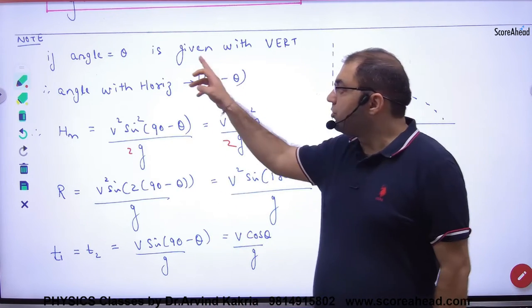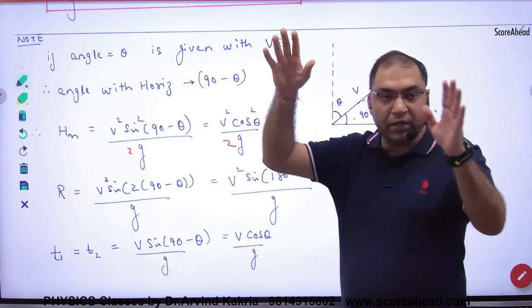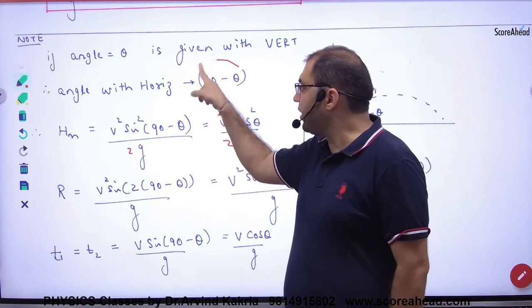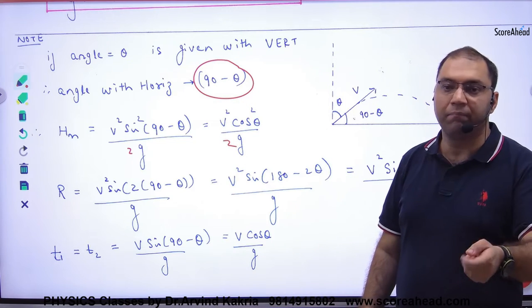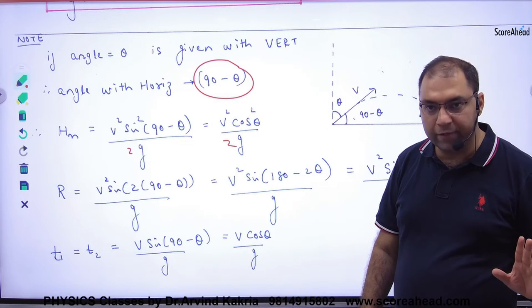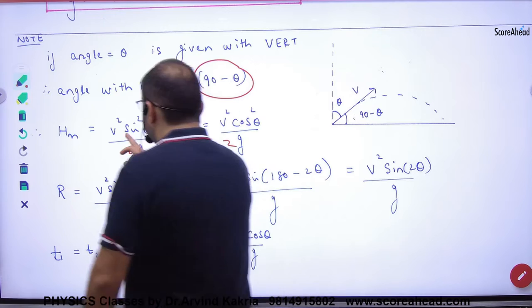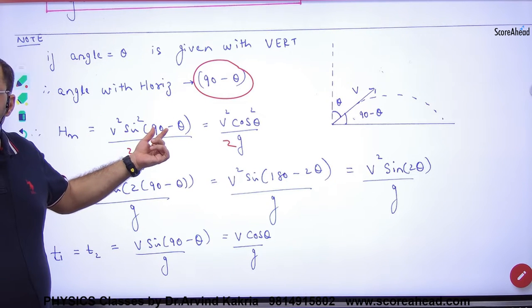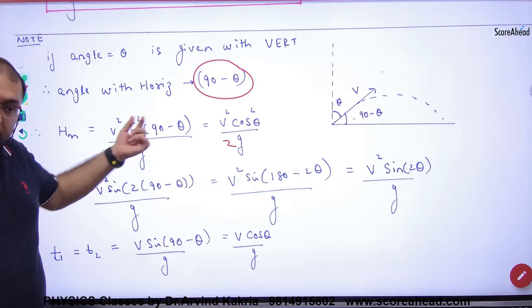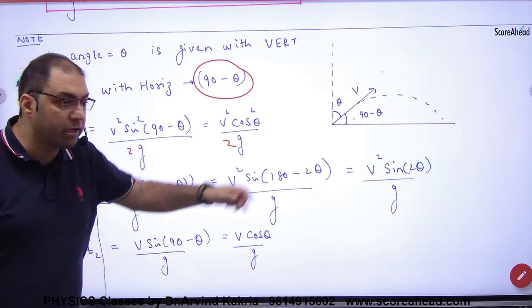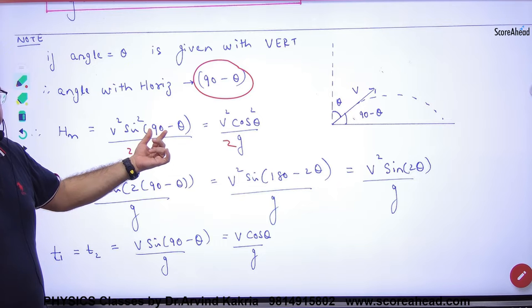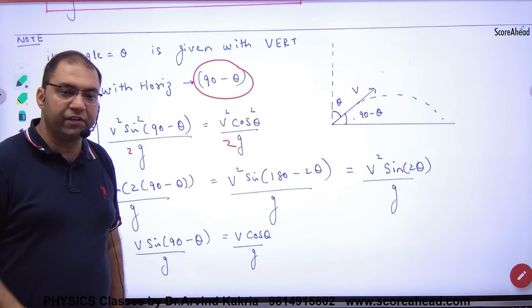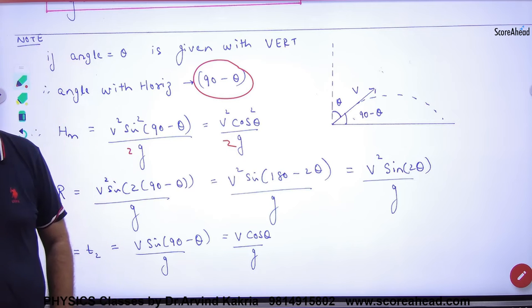So do the work. Wherever you have the angle theta given in the formulas which we have derived, what will we replace there? 90 minus theta. So in the formula of maximum height, V square sin square theta by 2g, but not theta here. Replace theta with 90 minus theta. So what is sin of 90 minus theta? Cos. So the answer is V square cos square theta by 2g.